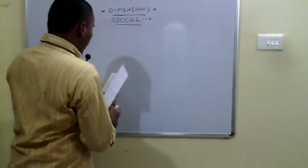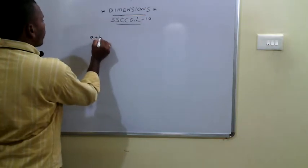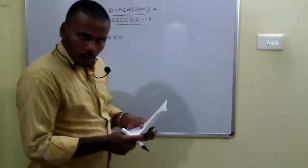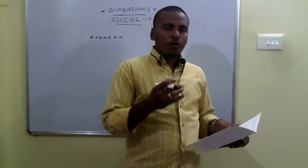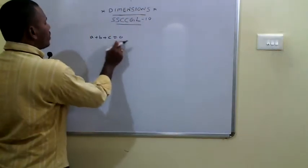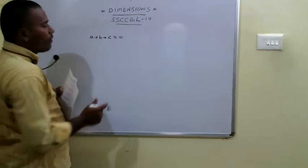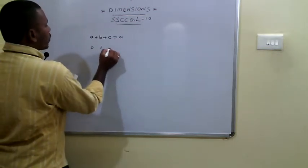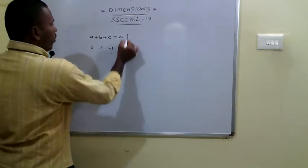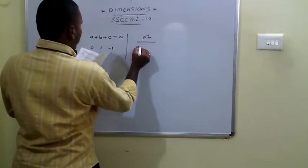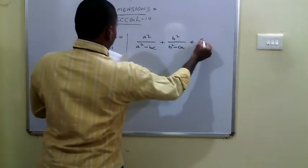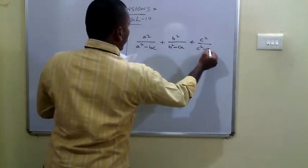The 52nd problem is an algebraic problem. It is given that a + b + c = 0, and they ask us to calculate the value of the expression: a²/(a² − bc) + b²/(b² − ca) + c²/(c² − ab). There are two ways to solve this — one using algebraic properties, and another by substituting values. Suppose a = 0, b = 1, c = −1 so that a + b + c = 0.